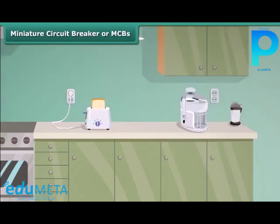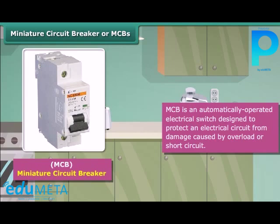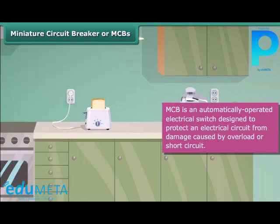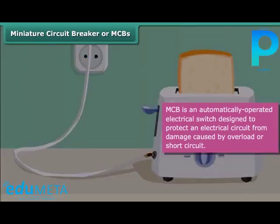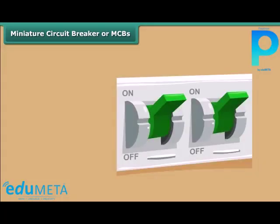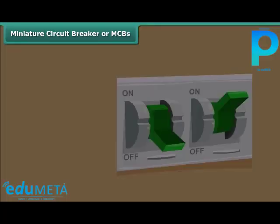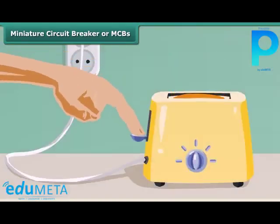A miniature circuit breaker, or MCB, is an automatically operated electrical switch designed to protect an electrical circuit from damage caused by overload or short circuit. Whenever there is a fault in a circuit, the MCB interrupts continuity to discontinue electrical flow immediately. It can be reset to resume normal operation.